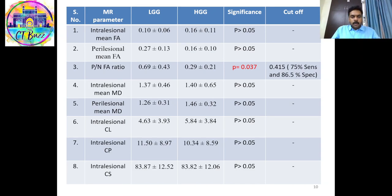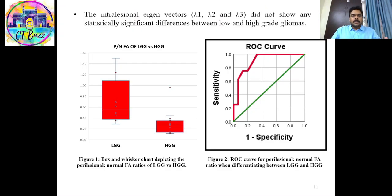Among the DTI metrics, one parameter found especially useful was the P/N FA ratio — the FA value of the peritumoral region divided by the FA value of the contralateral normal white matter — which was significantly lower in high-grade gliomas at a p-value of 0.037. A cutoff of 0.415 could differentiate between the two grades at 75% sensitivity and 86.5% specificity. The remaining DTI metrics did not yield significant results.